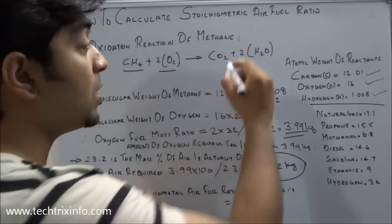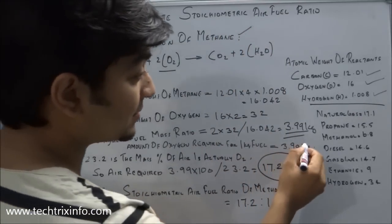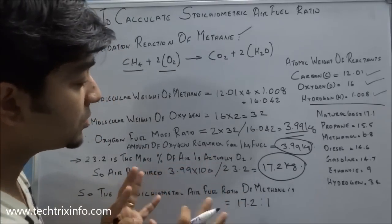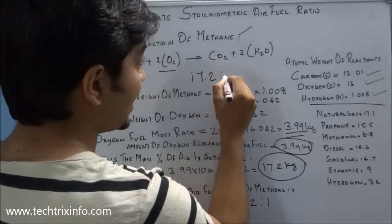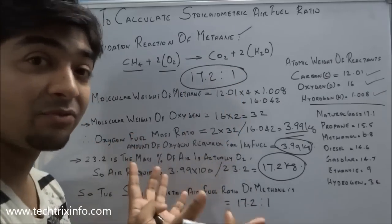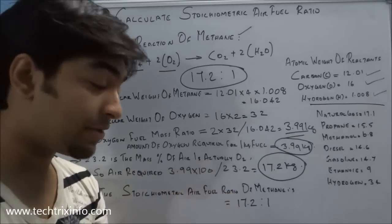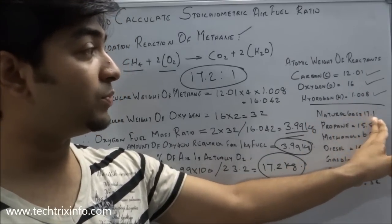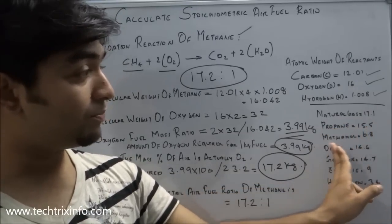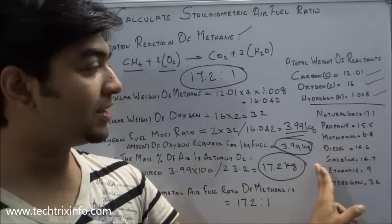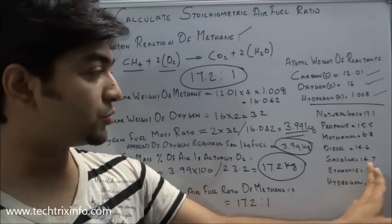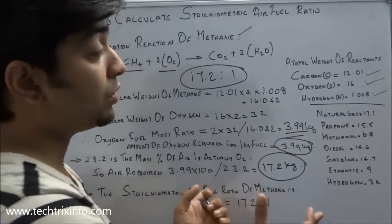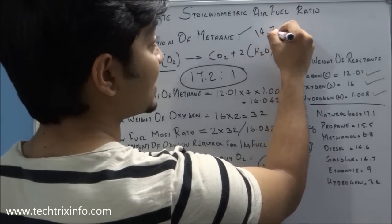Therefore, the stoichiometric air-fuel ratio of methane equals 17.2:1. Also, 3.99 kg of oxygen is exactly required to burn 1 kg of methane. Using the same approach for other fuels: natural gas is 17.1:1, propane is 15.5:1, methanol is 6.8:1, diesel is 14.6:1, gasoline is 14.7:1, ethanol is 9:1, and hydrogen is 34:1.